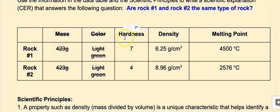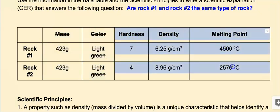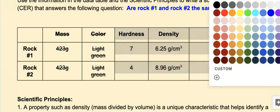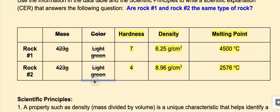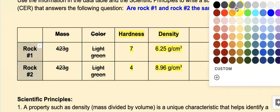Hardness, density, and melting point are all physical properties. So I'm going to highlight those — that's important information I need to look at. Then I have my two rocks, rocks one and two, and I'm going to highlight those as well.